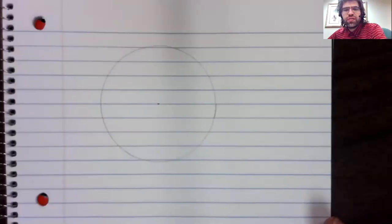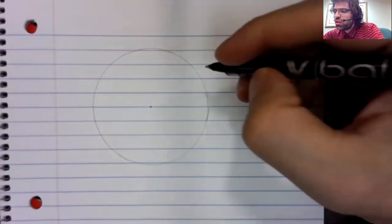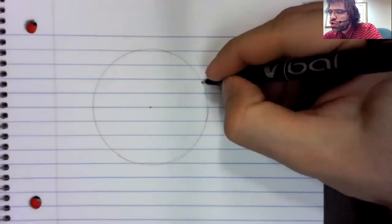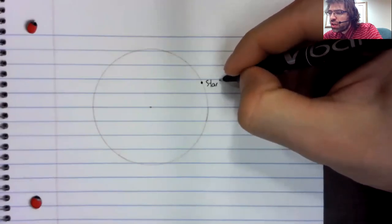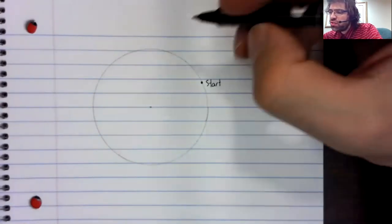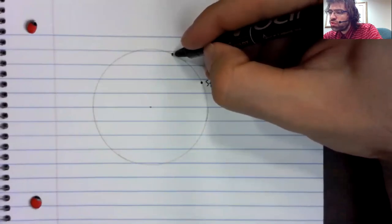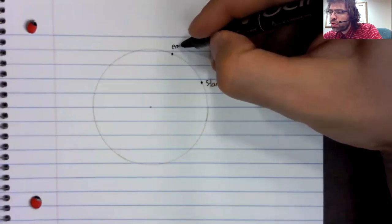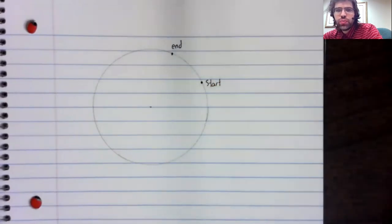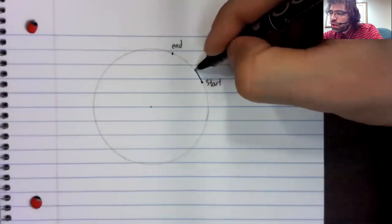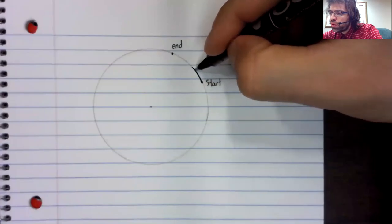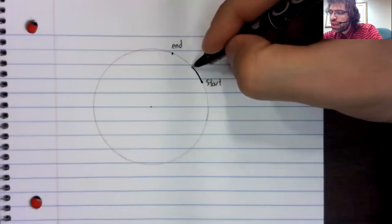In the last video, we considered the following situation. You are moving along a circle. You start somewhere, and you end somewhere, and you travel along this path.